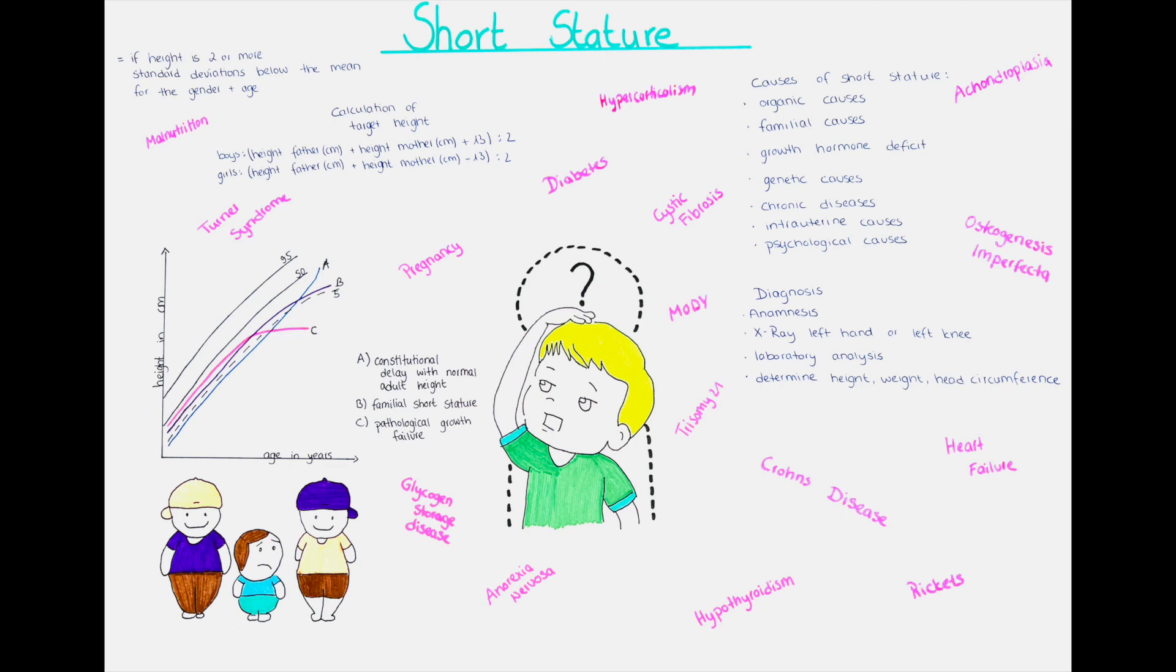If we calculate for example that a girl has two parents that are both 150 centimeters tall, that then would be 150 centimeters for the father plus 150 centimeters for the mother minus 13 which equals 287 divided by 2 would mean that the girl would be around 143.5 centimeters as an adult, so not exceptionally tall.